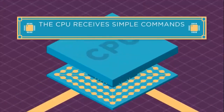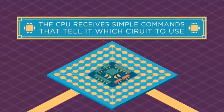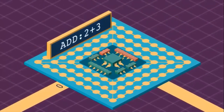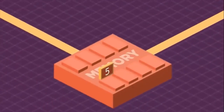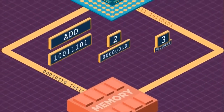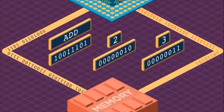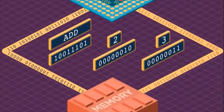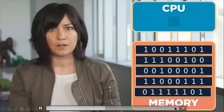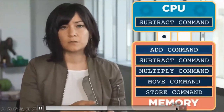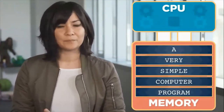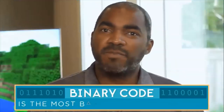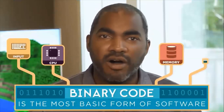The CPU receives simple commands that tell it which circuit to use for a specific job. For example, an add command tells the CPU to use its adder circuit to calculate a new number, and a store command tells the CPU to use a different circuit to save that result into memory. Just like numbers, all of these simple commands can be represented in binary — ones and zeros, or on and off electrical signals. The binary commands are stored in memory and the CPU fetches and executes them in sequence, one after the other. This sequence of commands is a very simple computer program.